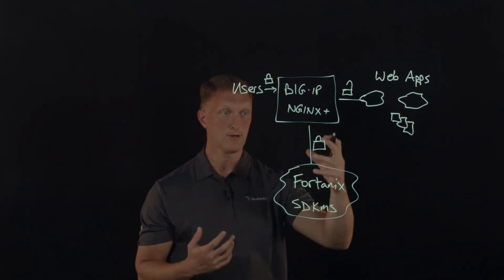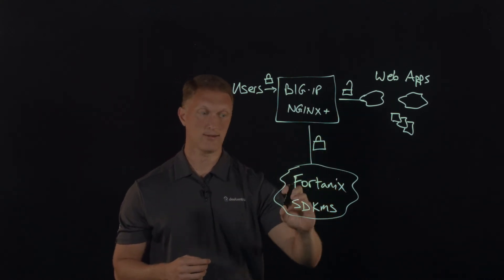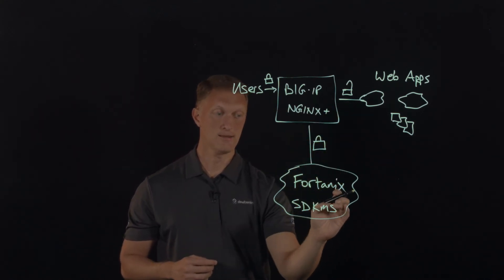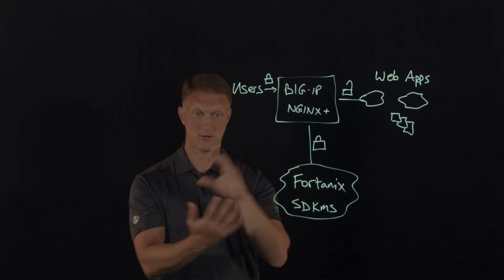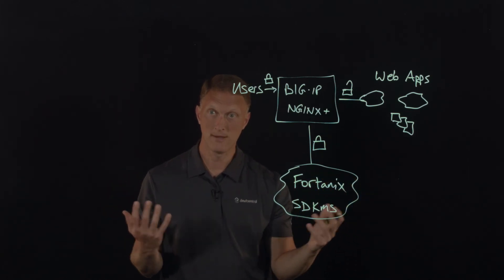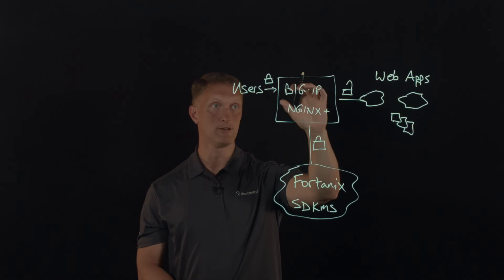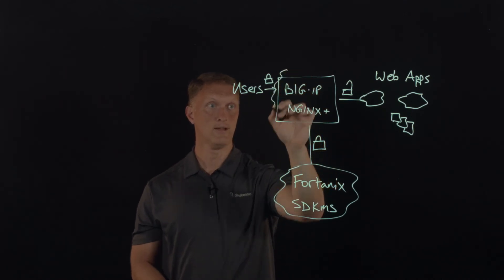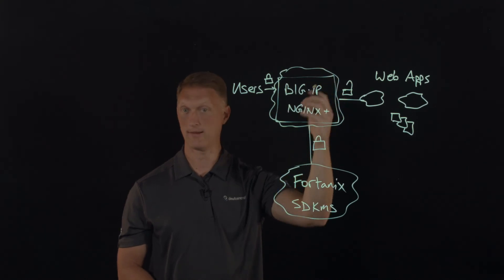And then all of the crypto operations are now offloaded to the Fortanix self-defending key management service. So this again gives you going back to the original description of the requirements that we're looking for. It needs to be cloud agnostic. So you're not locked into a cloud here. In fact, you could deploy Big IP. I'll put a cloud around all this stuff too. So you can deploy Big IP on-prem or in the cloud. It doesn't matter.